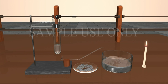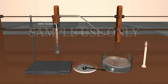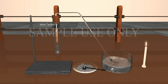Take a test tube containing 2-3 milliliters of dilute sulfuric acid and add a few zinc granules to it. Cover the test tube with a rubber cork. Observe the surface of the zinc granules. We can observe the hydrogen gas with the appearance of bubbles.